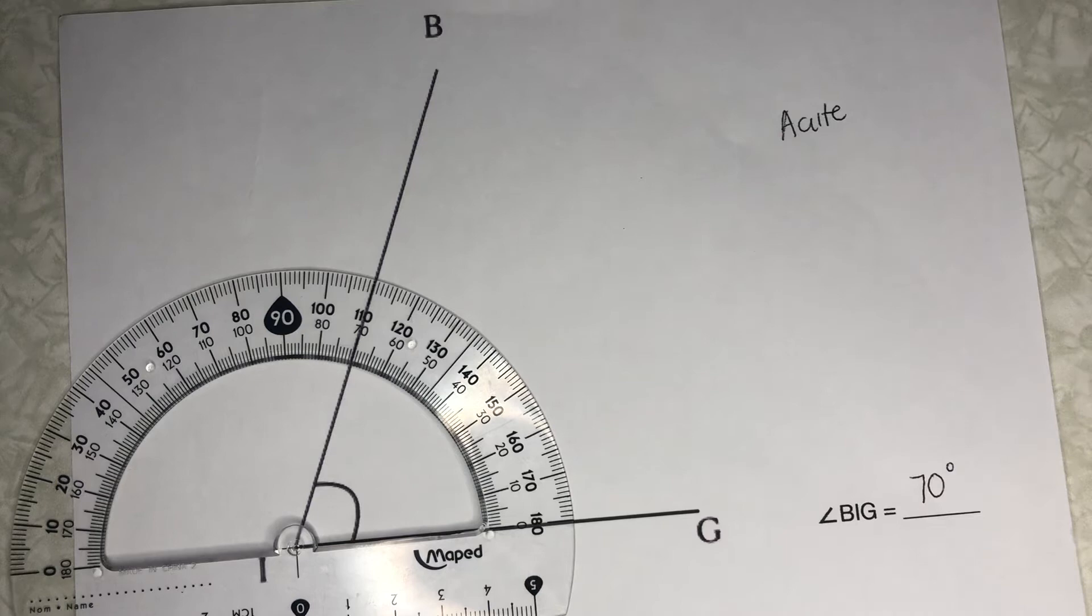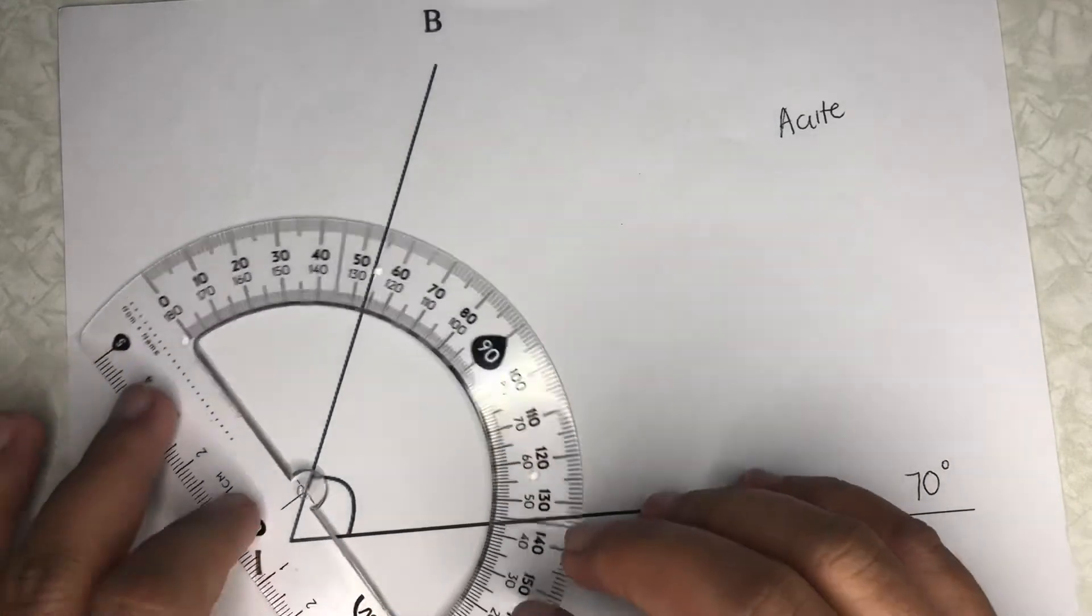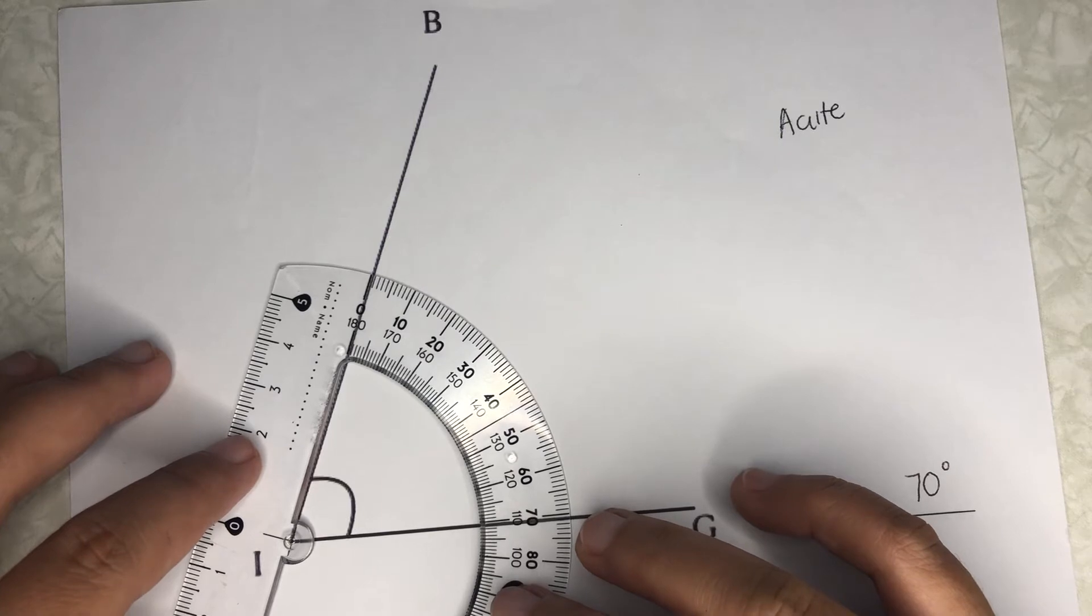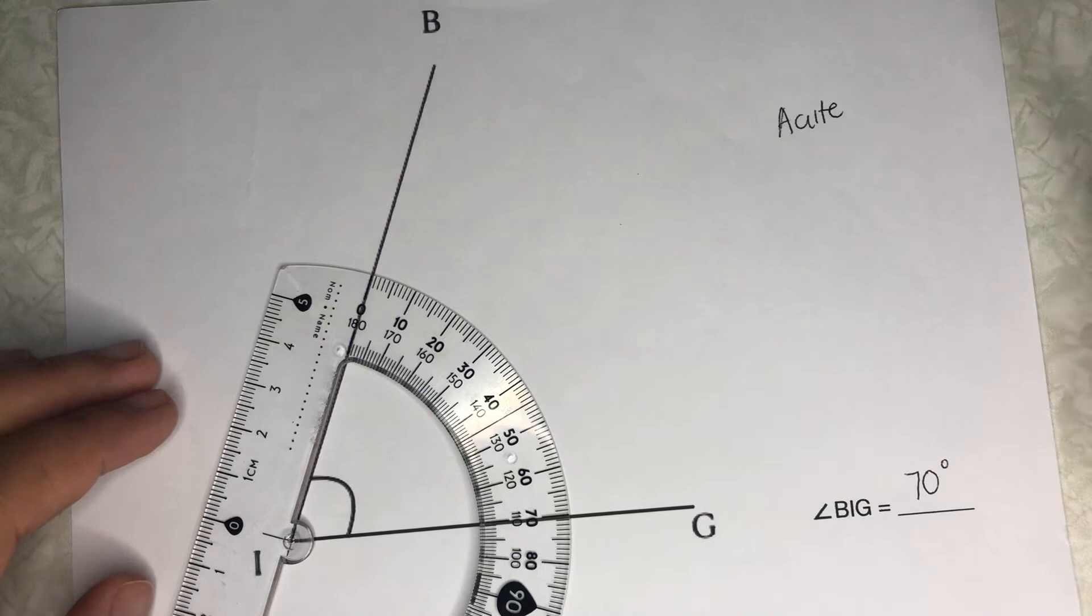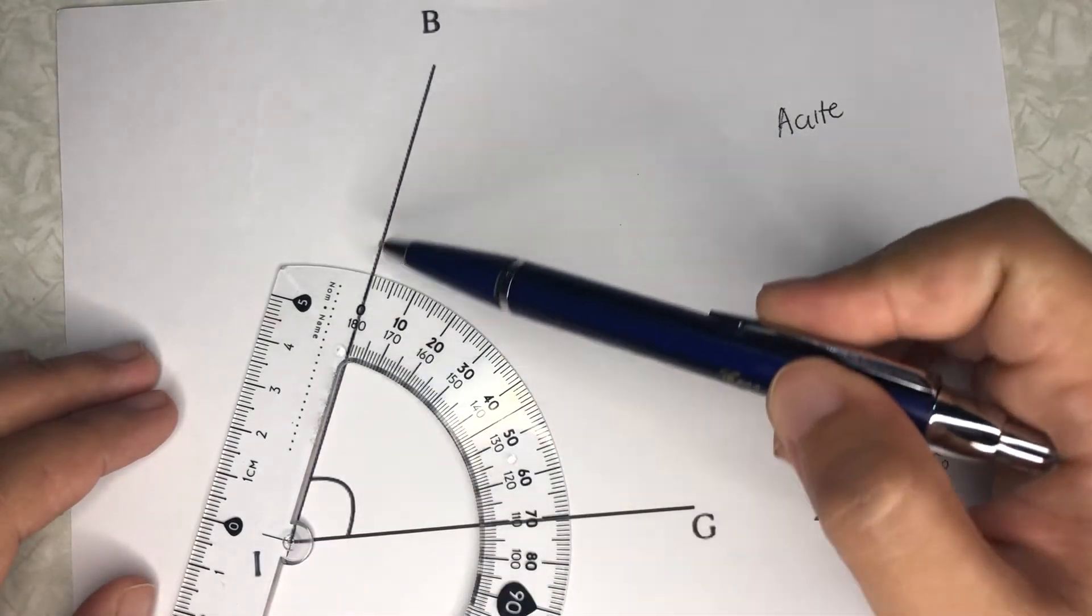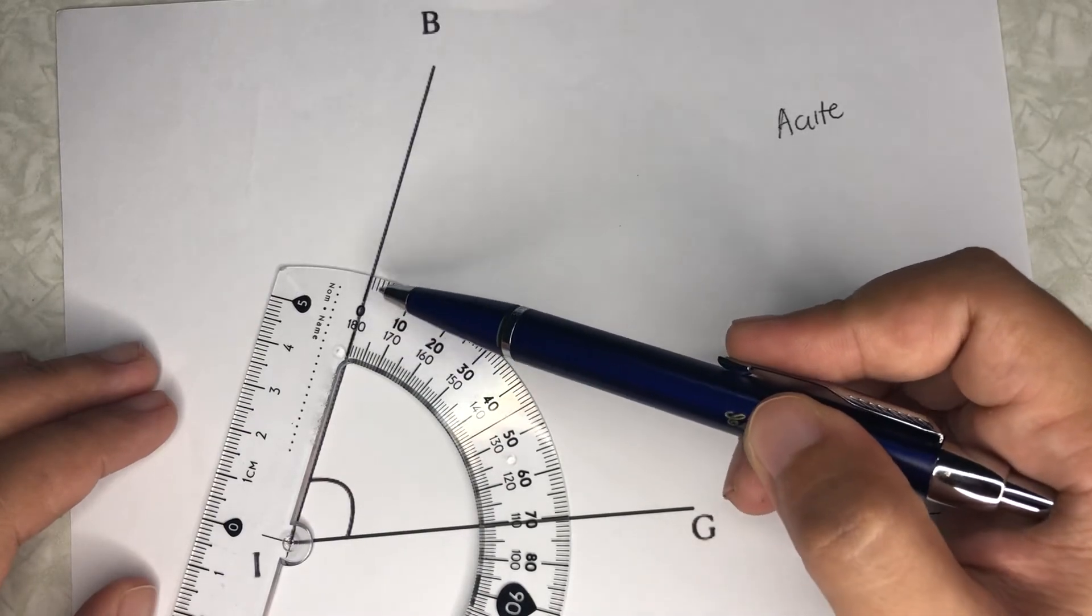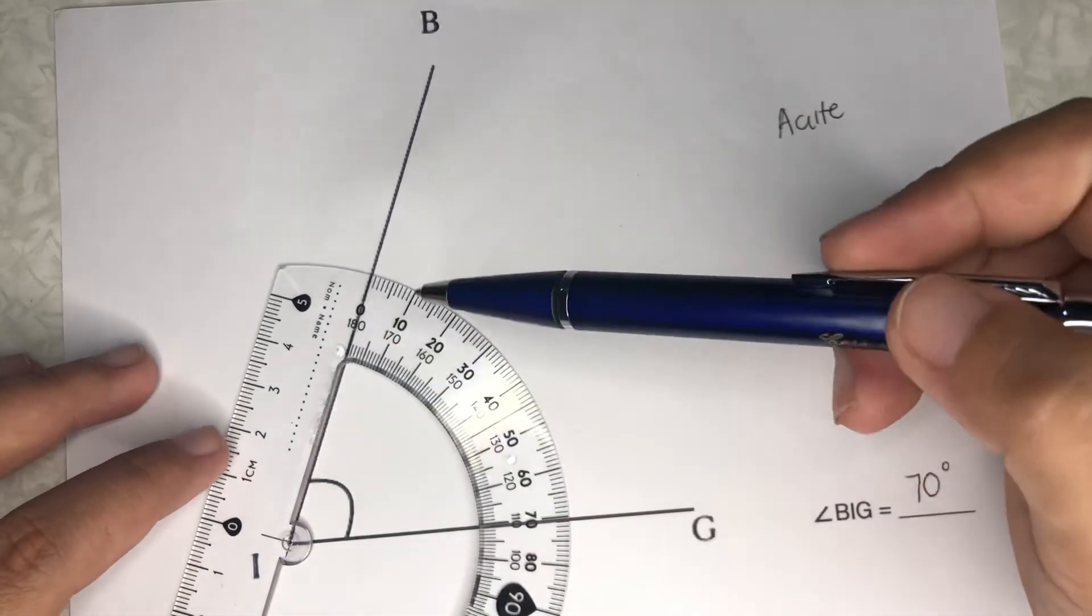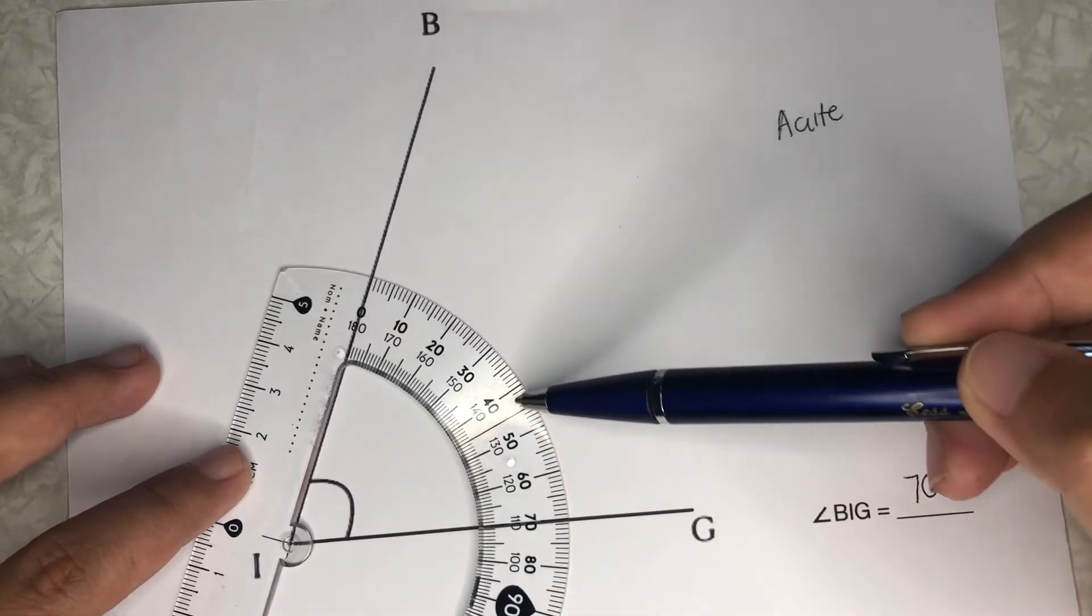What if I use the other leg? Let's try aligning the other leg. As you can see, this time with leg IB, our zero is in the outer scale. Earlier we used the inner scale, so now using the outer scale, we have from zero up until the other leg, it's still 70 degrees.